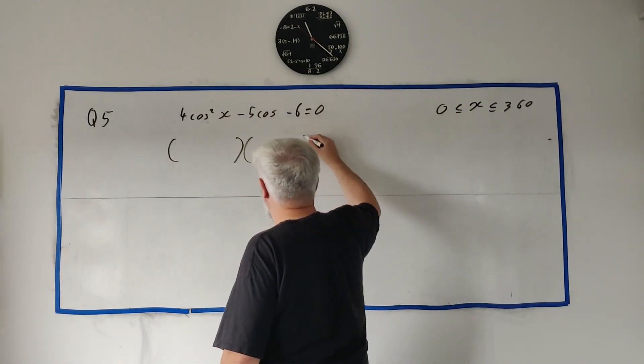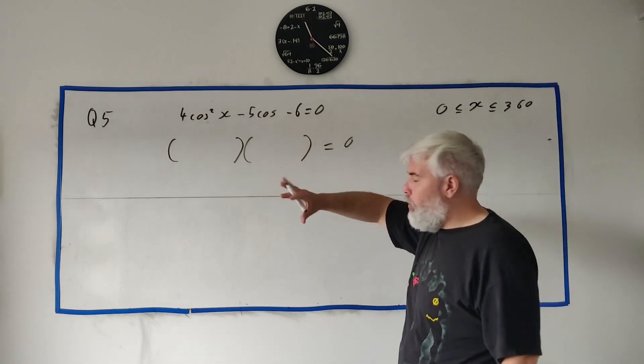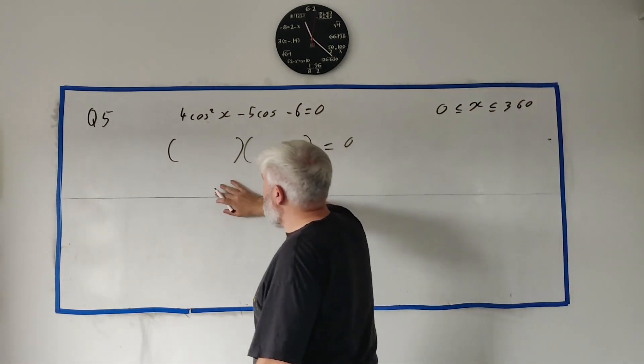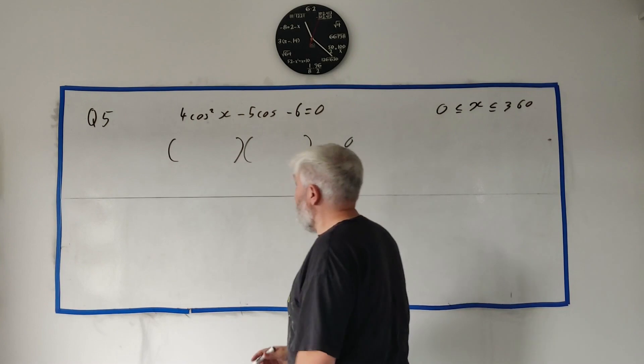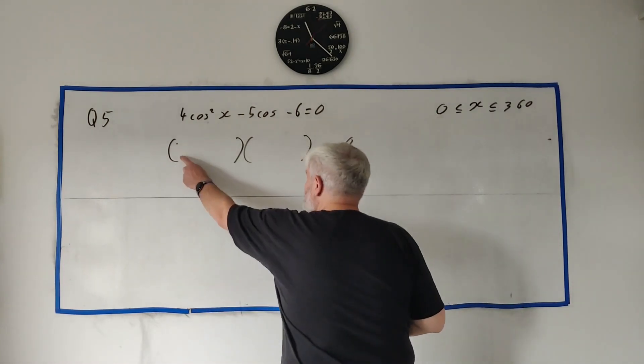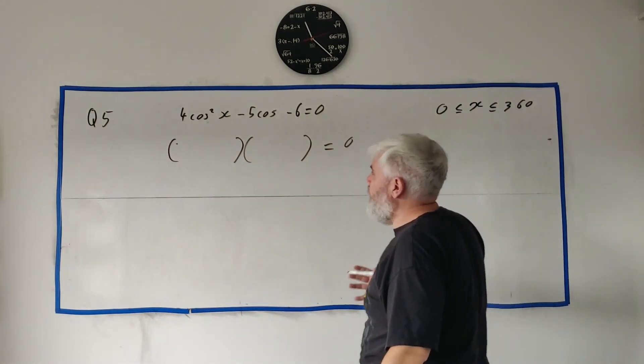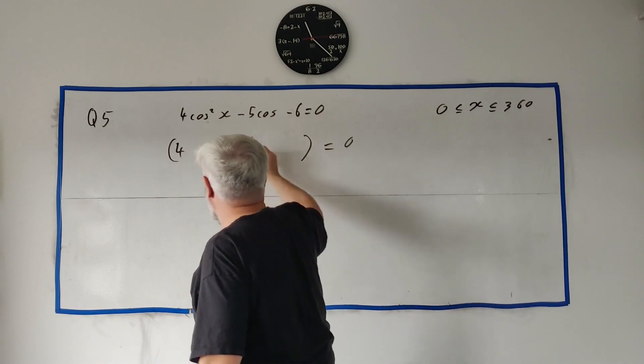It actually factorizes. It's not very easy, the factorization. So go ahead and use the minus b formula if you want, but it does factorize. Thankfully I have my notes, so I don't have to think too much about it. And I tried two and two and then one and six, two and three. Couldn't get it to work. So four and one is what worked.